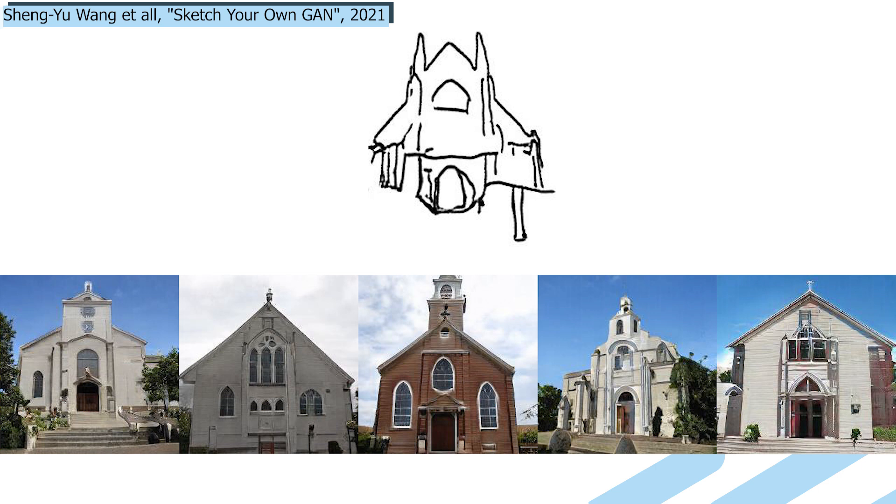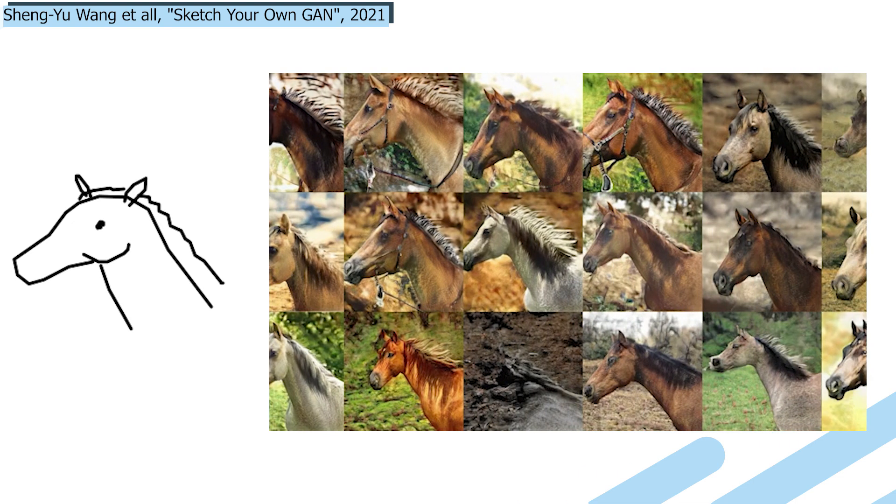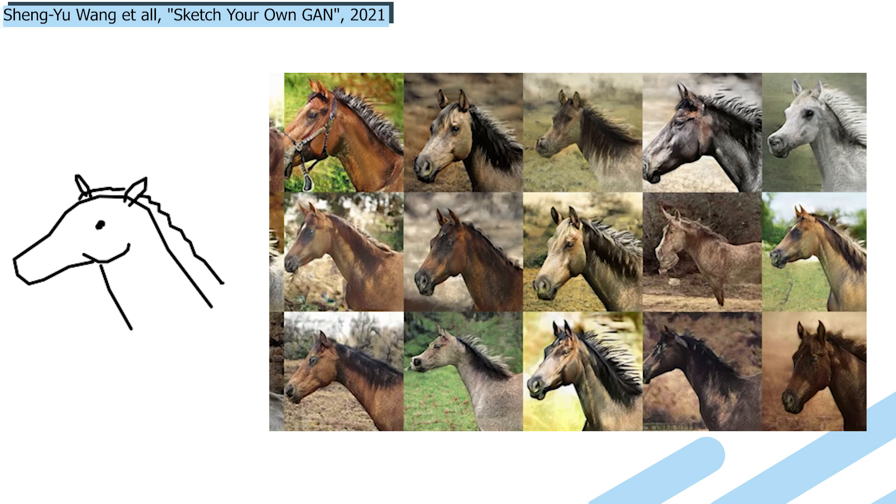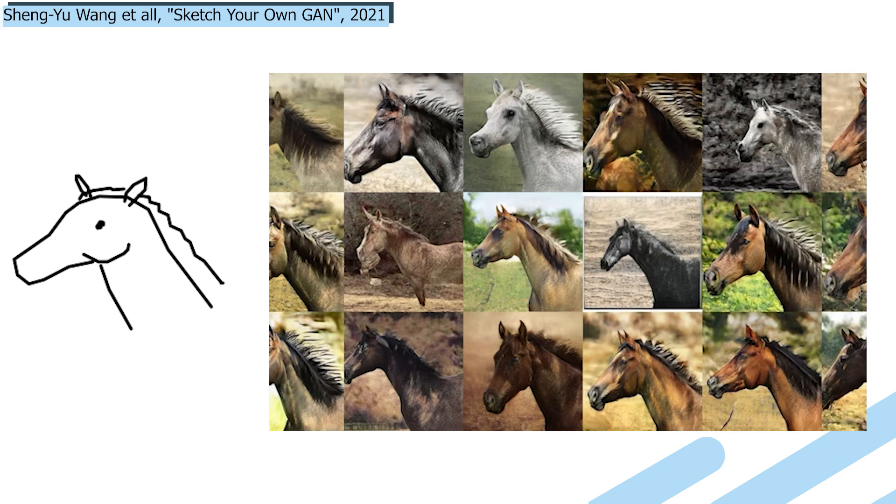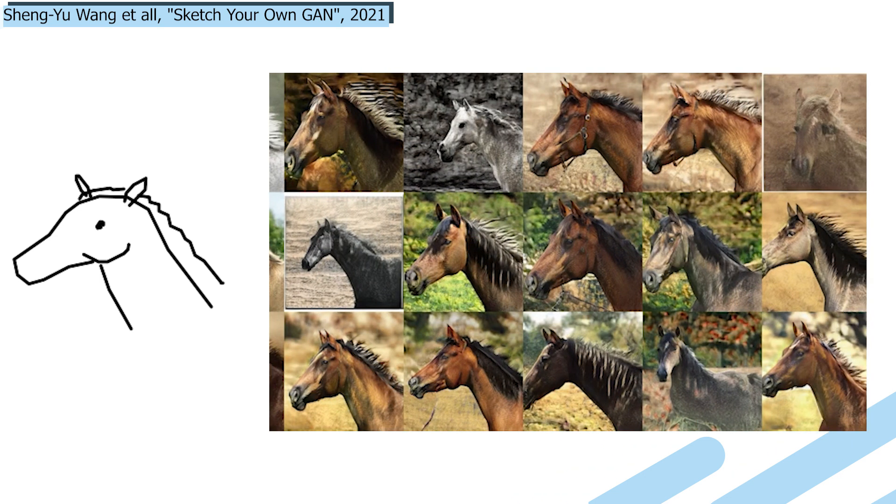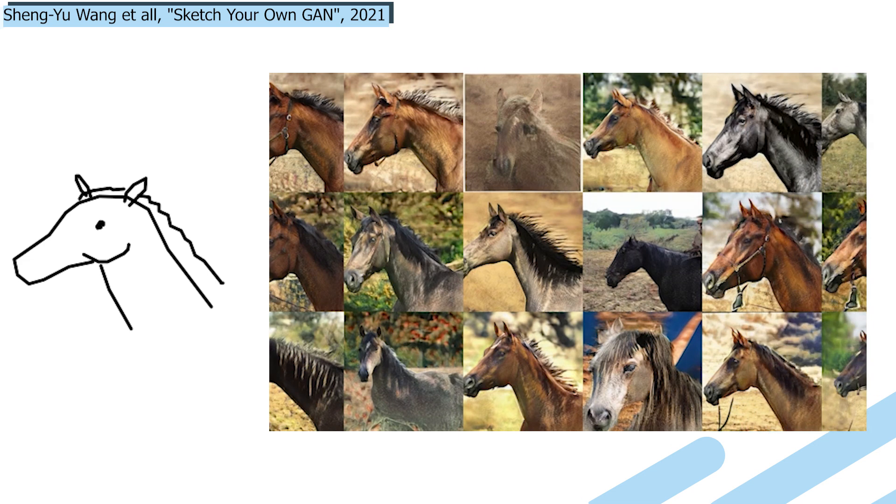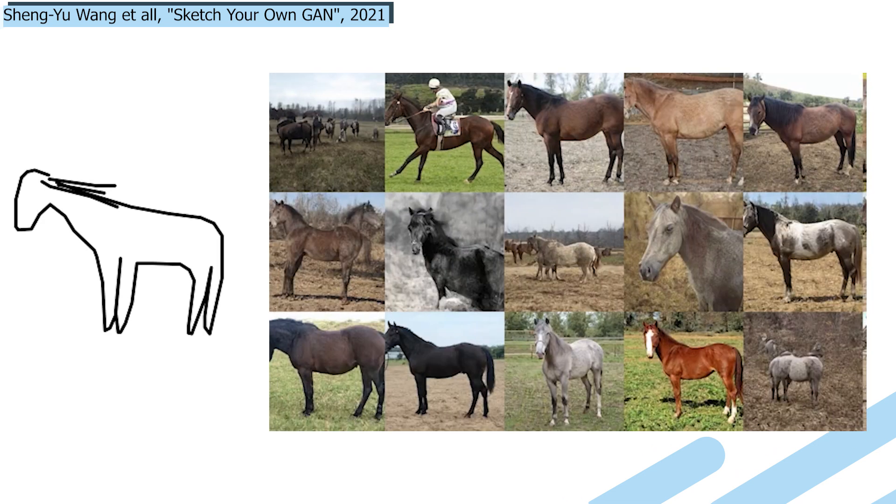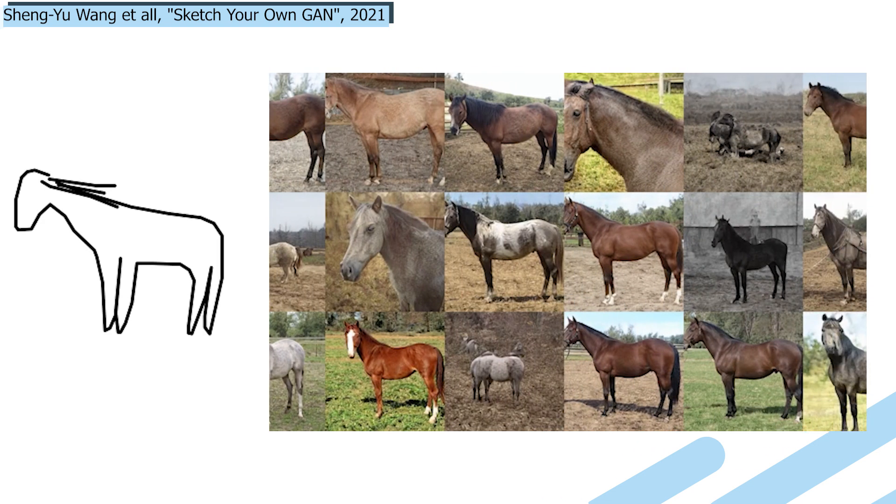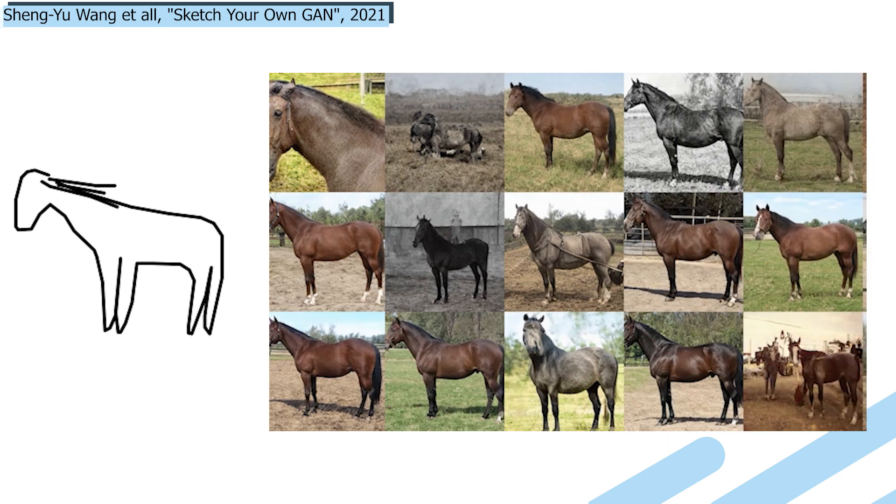But how did they do that? What have they figured out about generative models that can be taken advantage of to control the output? There are various challenges for such a task, like the amount of data and the model expertise needed. The data problem is fixed by using a model that was already trained, which we simply train to adapt to our task using a handful of sketches instead of hundreds or thousands of sketches and image pairs which are typically needed.